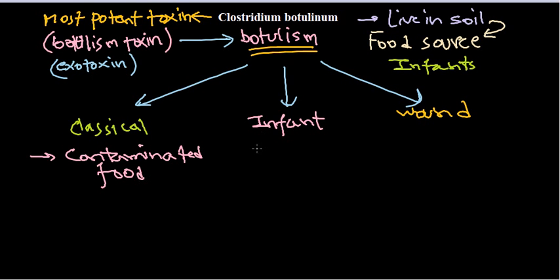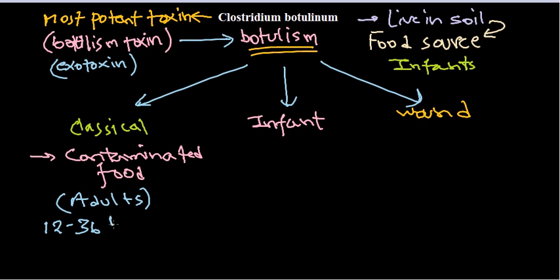Classical botulism comes from contaminated food and is most common in adults. The infection can be seen within 12 to 36 hours of the infection, after which we start to see different symptoms like muscle spasm.